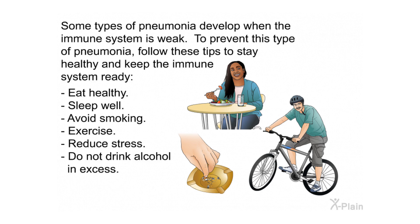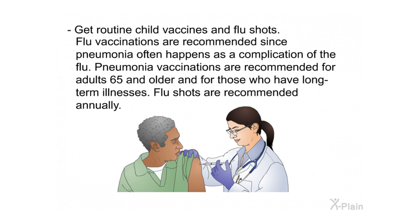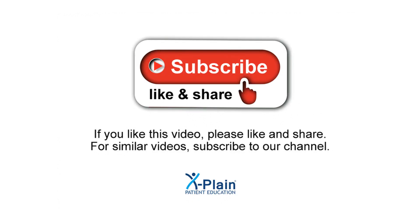To keep your immune system strong and prevent pneumonia, follow these tips: eat healthy, sleep well, avoid smoking, exercise, reduce stress, and do not drink alcohol in excess. Get routine child vaccines and flu shots — flu vaccinations are recommended since pneumonia often happens as a complication of the flu. Pneumonia vaccinations are recommended for adults 65 and older and for those with long-term illnesses. Flu shots are recommended annually.